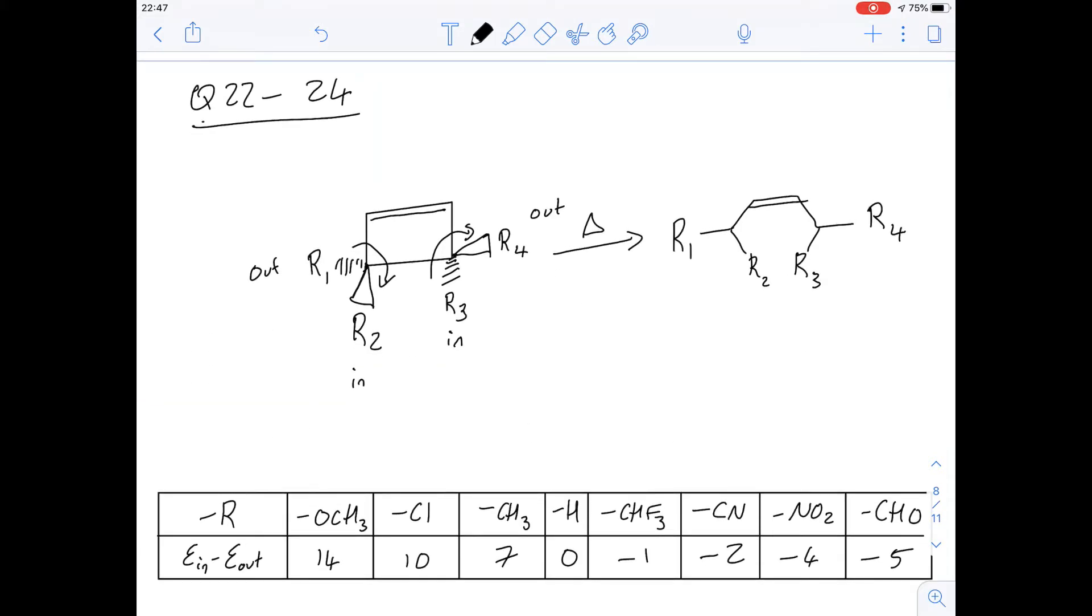Okay so next we've got questions 22 to 24 which is a bit of a complicated chemistry question about the retrocyclization of cyclobutenes. I've drawn out all the information they've given us here but I want to just draw some attention to some of the things that they've said to explain what these energy values mean.